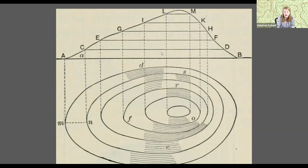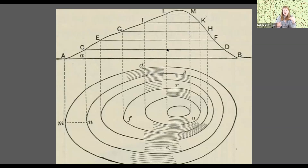If you look at this picture on the screen, at the top there's a picture of a little hill. You can see the hill has a peak at the top, slightly shifted to the right, and you see all these lines going across it. The lines are spaced about the same distance from each other — from line A-to-B, up to line C-to-D, then E-to-F, then G-to-H, then I-to-K, then L-to-M. Those lines are all spaced apart the same amount, so every time you reach a new line you've gone the same distance higher up.